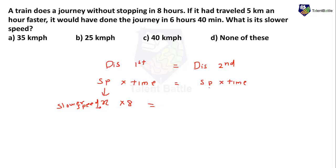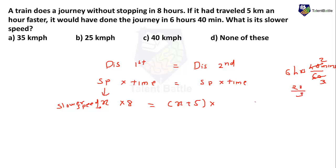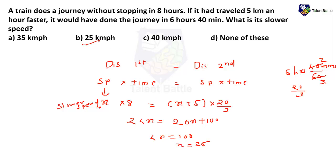For the second journey, speed is x + 5 since it is 5 km/h faster. Time is 6 hours 40 minutes, which converts to 20/3 hours (since 40/60 = 2/3, giving 6 + 2/3 = 20/3). So the equation is: 8x = (x + 5) × (20/3). Multiplying both sides by 3: 24x = 20x + 100. Therefore 4x = 100, and x = 25 km/h, which is the slower speed.